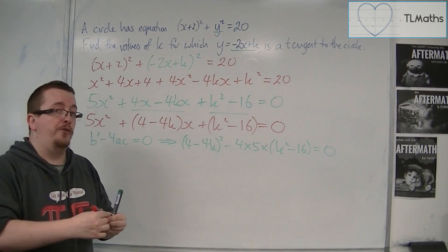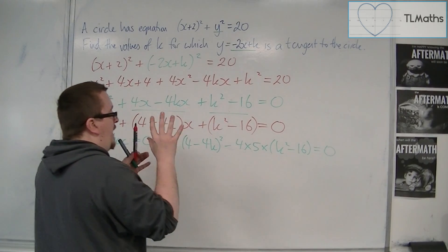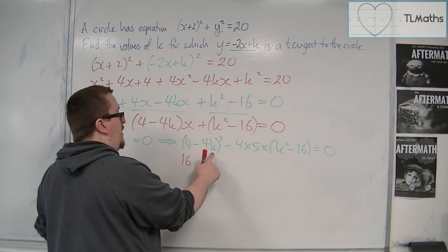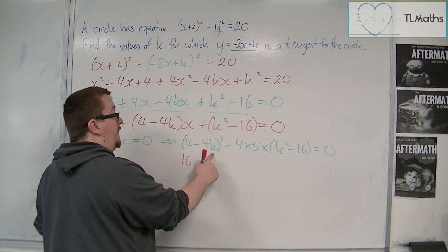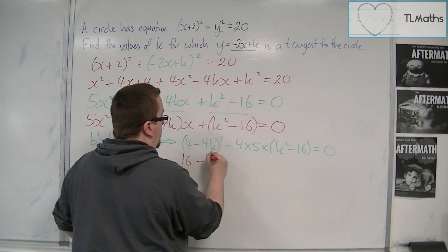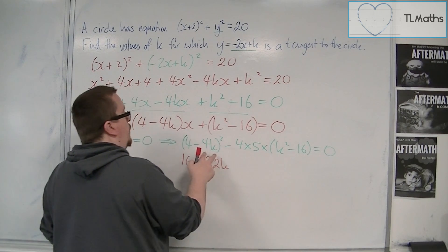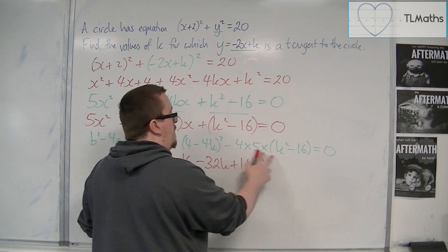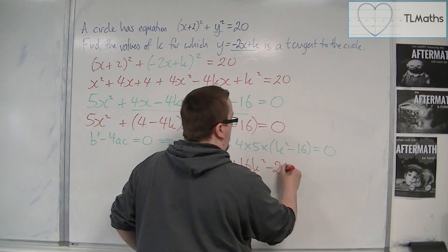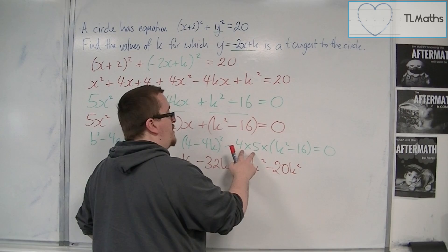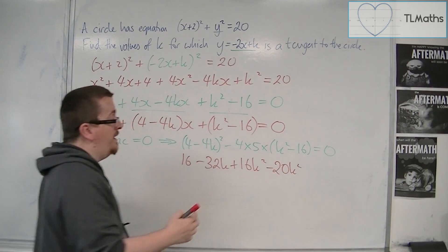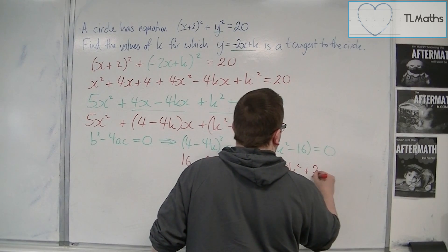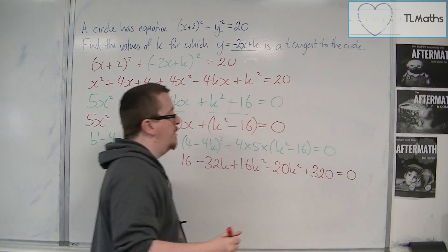So we want to solve this equation. So expand everything out. We have this 4², so 16. We've got 4 times -4k, so -16k, twice, so -32k. We're going to get 16k². We've got -20k² coming from this bit. And -20 times -16, so +320. And that's going to be equal to 0.